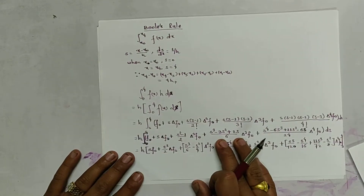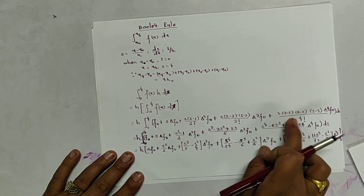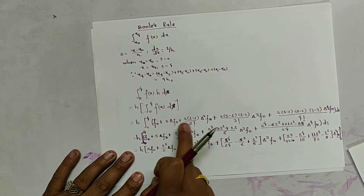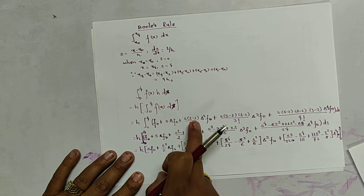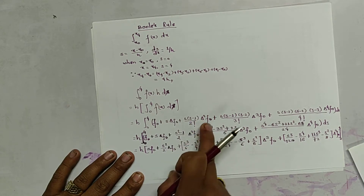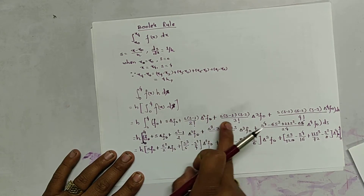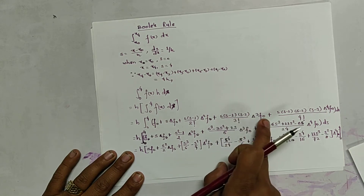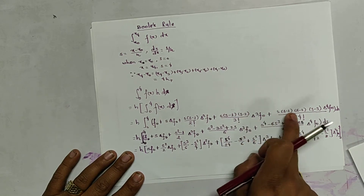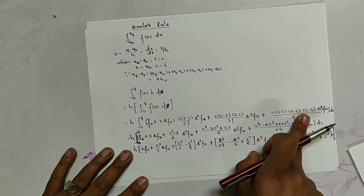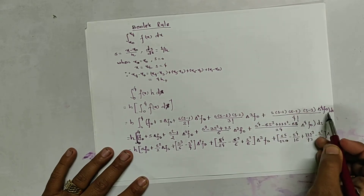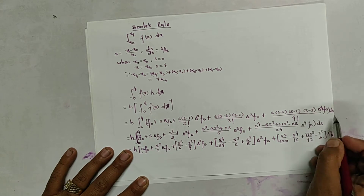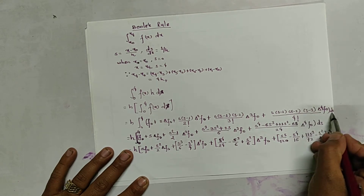When n equals to 4, we rewrite up to this form: f0 plus s·Δf0 plus s(s−1)/2! · Δ²f0 plus s(s−1)(s−2)/3! · Δ³f0 plus s(s−1)(s−2)(s−3)/4! · Δ⁴f0, integrated with respect to s.